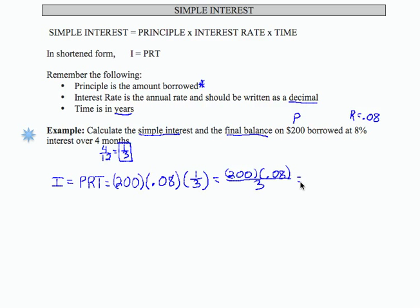If I perform that computation on my calculator, I get 5.33. That's my simple interest. I rounded it to the nearest cent, $5.33.